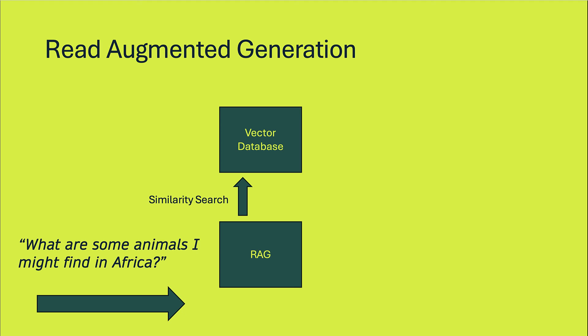So if I asked it, what are some animals I might find in Africa? We could use read augmented generation to perform a similarity search on that against my vector database. And I can seed my vector database with whatever I like. This could be some relevant data. This could be some live data. It could be some stuff from an API.